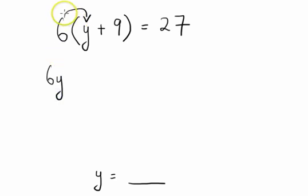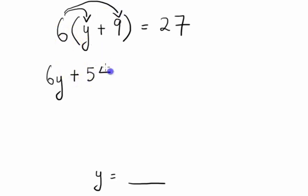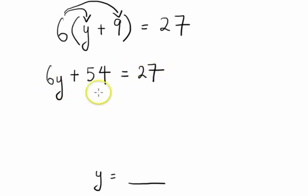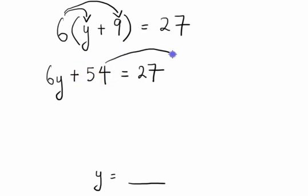We multiply 6 by the first term: 6 times y gives us 6y. Then we multiply 6 by the second term: 6 times 9 gives us 54. The right-hand side remains 27. So we now have 6y plus 54 equals 27. Bringing 54 over gives us 6y equals 27 minus 54.